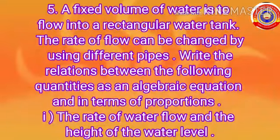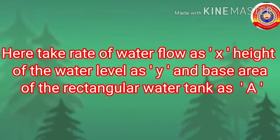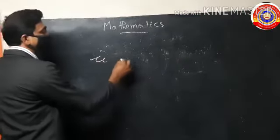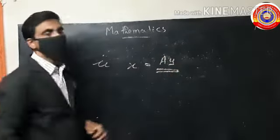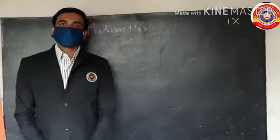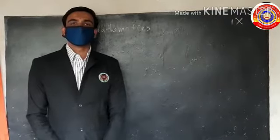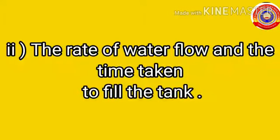Consider the fifth question. The first sub-question asks to write the relation between the rate of water flow and the height of the water level in terms of proportion. Take the rate of water flow as x, the height of the water level as y, and the base area of the rectangular water tank as A. Then x = A·y. Here the rate of water flow is directly proportional to the height of the water level.